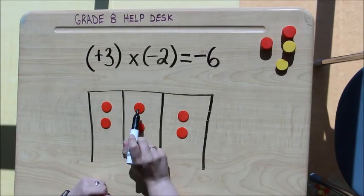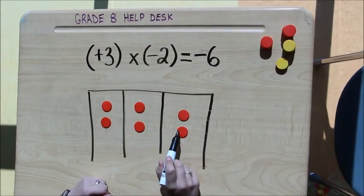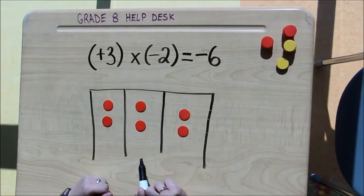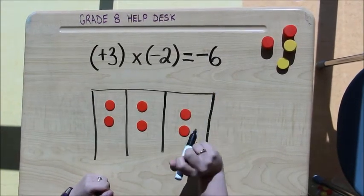1, 2, 3, 4, 5, 6 of the red tiles. Which would be equal to negative 6. So my answer is correct.